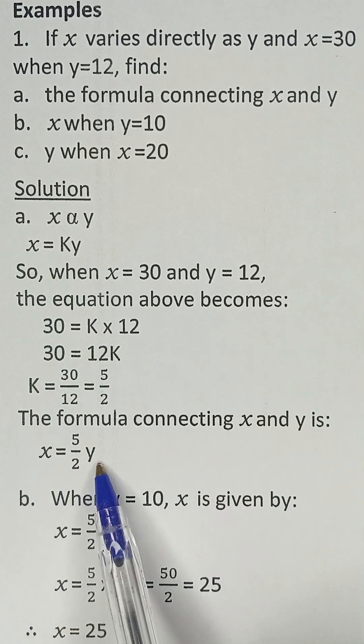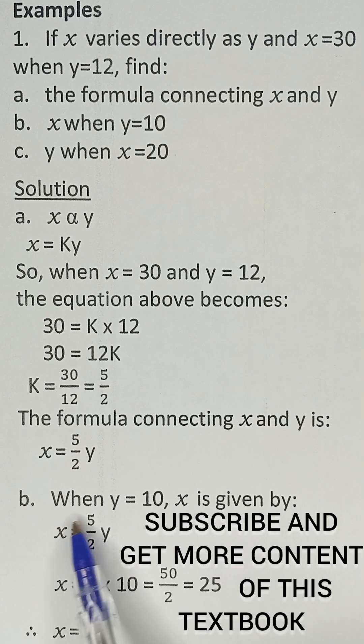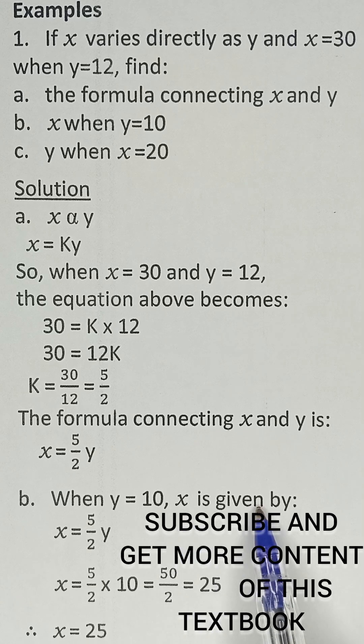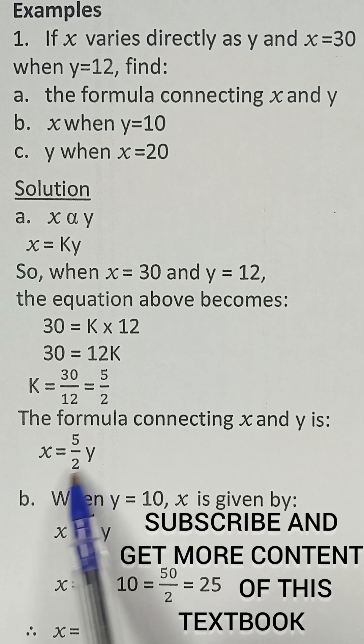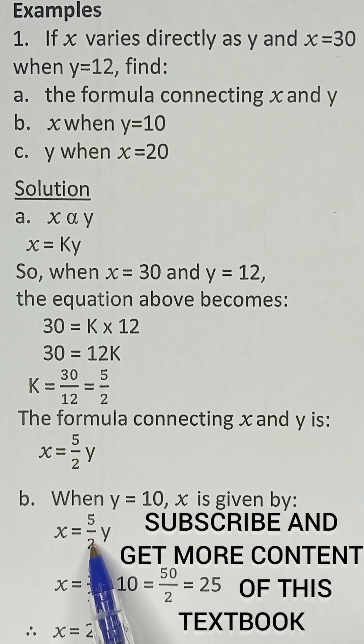So this is the formula connecting X and Y. And then the B part of the equation says we should find X when Y is equal to 10. So for us to obtain X now, we will take back this formula that is connecting X and Y. That says X is equal to 5 over 2 multiplied by Y.